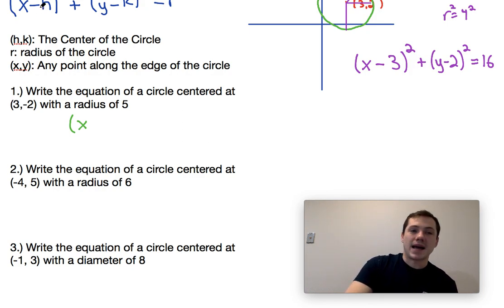x and y always remain in the equation as x and y. It's going to be minus our h value, so minus three squared, y minus negative two, which ends up being plus two squared. And since the radius is five, radius squared would be 25.